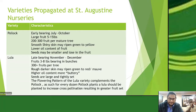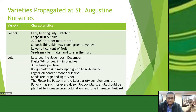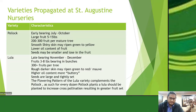In the Lula variety, the seeds are larger and tightly set. An interesting thing to note is that the flowering pattern of the Lula variety complements the Pollock. The flowers of the avocado change from female to male according to the time of day, and with the Lula variety, the flowers change to male while the Pollock is female. This means more flowers get pollinated and more fruits are produced. If you plant one Lula to each Pollock plant, you'll get higher fruit yields through cross-pollination.